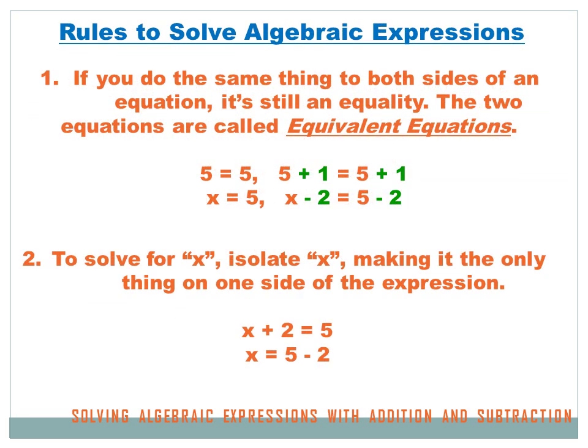Once you have an equation you need to solve the equation for the variable — you need to find out what the variable equals, and there are certain rules that will help you get there. The first rule is: if you do the same thing to both sides of an equation, it's still an equality. The two equations are called equivalent equations. Let's look at an example.